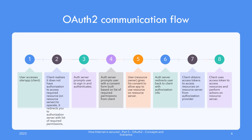Note there are additional steps between step five and step six called the authorization code grant, where instead of giving the access token directly to the client, the server first issues an authorization code. The client needs to send a request with the code and its ID and secret registered with the server to authenticate the client and receive the token. Such steps can be missing and the authentication process of the client may be different. For now, just take note that there are missing details and move ahead.